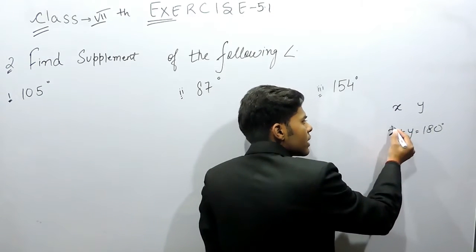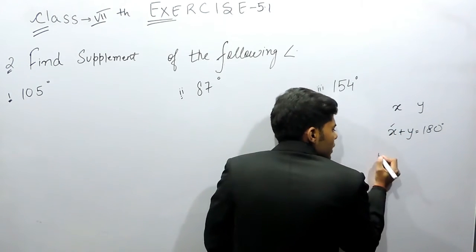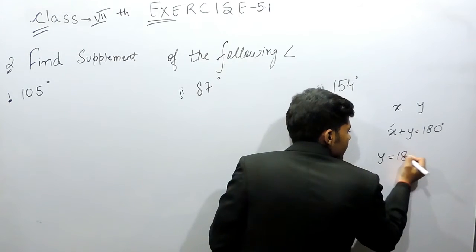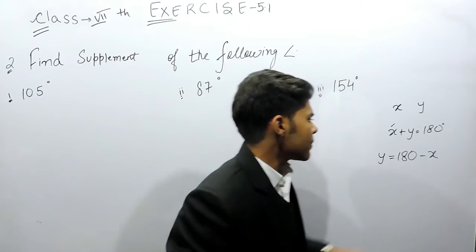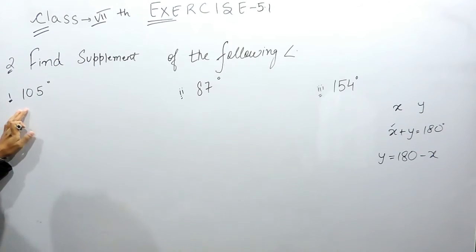Now if we are given one angle, supposedly x, then y will automatically be 180 minus x. So this is the supplement of angle x. Similarly, here also we'll do the same thing. One angle is given to us, supposedly x is given. We know that x plus y should be equals to 180, that means the second angle should be equals to 180 minus the first angle.